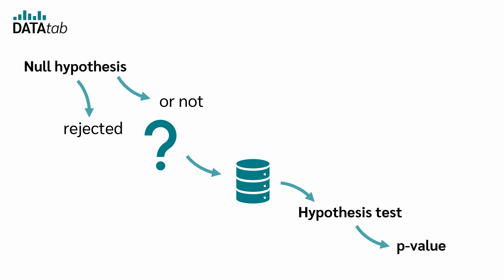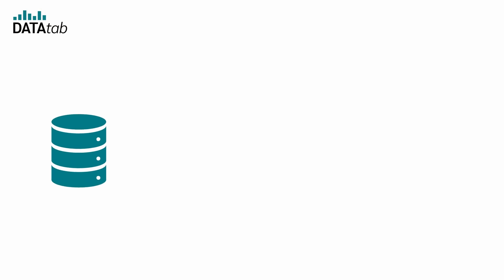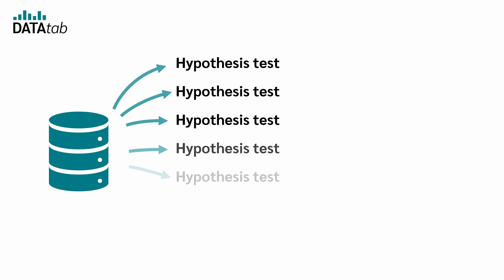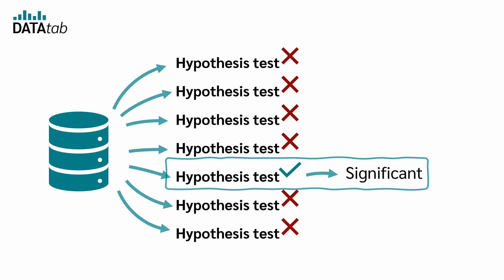The hypothesis test provides a p-value. The p-value indicates whether the mean values differ significantly from each other and helps you decide whether to reject the null hypothesis. However, for many researchers achieving a significant p-value has become the ultimate goal, driven by the high pressure to obtain and publish significant results. As a result, the entire research process is often turned upside down: a lot of data is simply collected, then hypothesis tests are calculated with all possible combinations, and it is simply checked whether any of the hypothesis tests have produced a significant result.